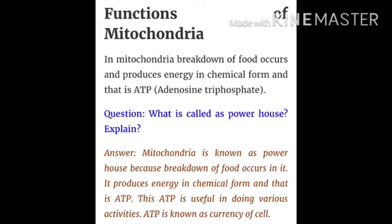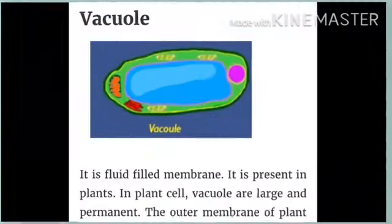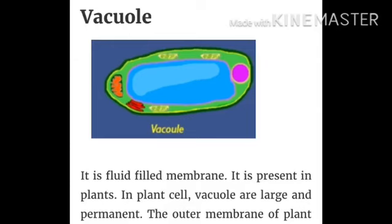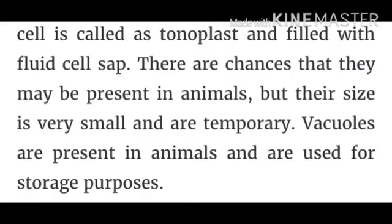Now, vacuoles. They are fluid-filled membrane-bound structures. In plant cells, vacuoles are large and permanent. The outer membrane of the plant vacuole is called the tonoplast and is filled with fluid called cell sap. In animal cells, vacuoles may be present but their size is very small and they are temporary. Vacuoles in animal cells are used for storage purposes.